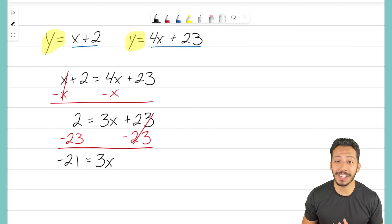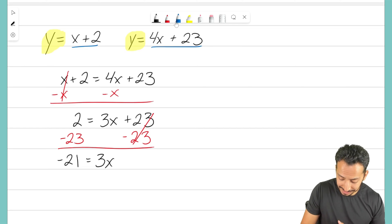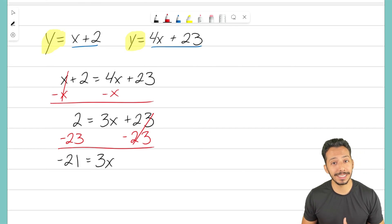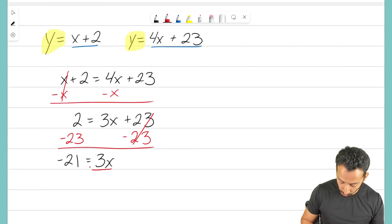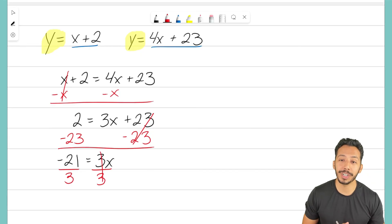Okay, we almost have x all by itself. We've isolated the x term, but we have three x's. We don't want three x's, we want one x. So to get rid of this coefficient out in front, we're going to divide both sides by three.